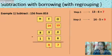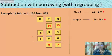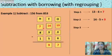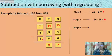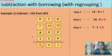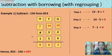14 minus 5: remove 5 from 14, you get 9. So the answer in the tens place is 9. Now the hundreds place: one number was given to the tens place, so 8 minus 1 leaves 7. Now 7 minus 1 equals 6. The answer in the hundreds place is 6. So the final answer is 697: 853 minus 156 equals 697.